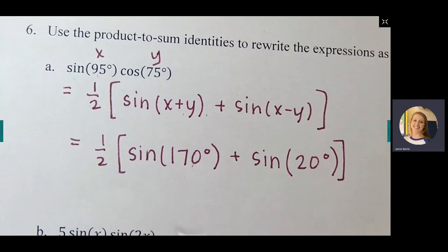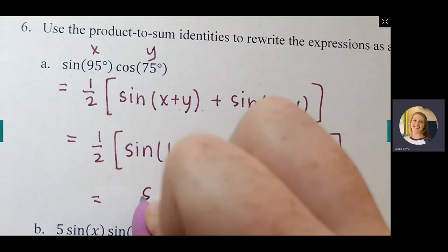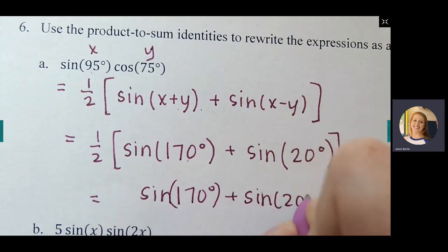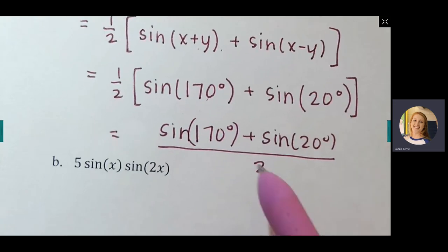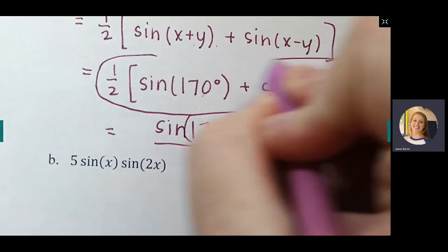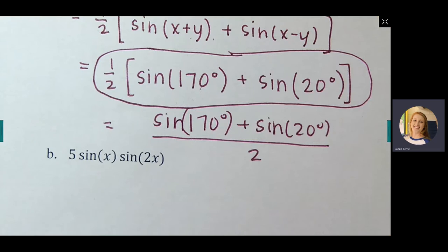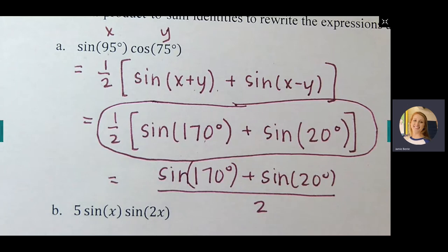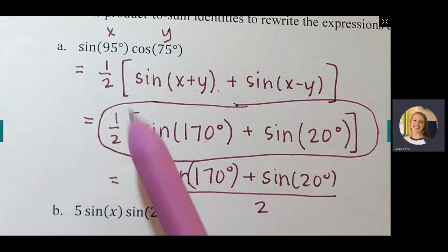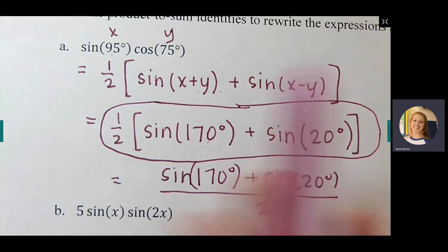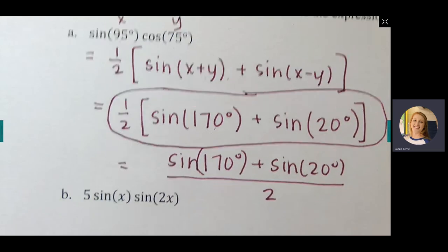If you want to get rid of the one-half out front, you can write it as [sine(170°) + sine(20°)] over 2 — multiplying by one-half is the same as dividing by 2. But stopping at the one-half form is fine. The whole purpose is that when you reach solving equations in the next section, it's sometimes easier to work with a sum rather than a product.